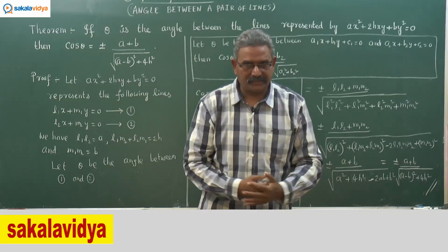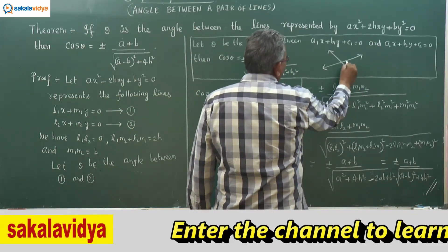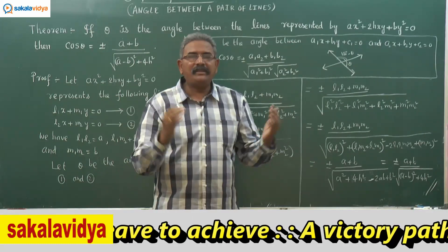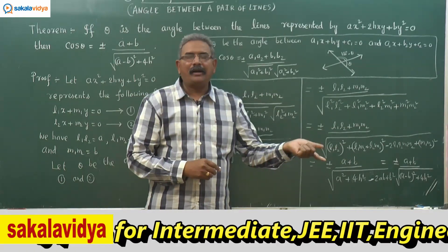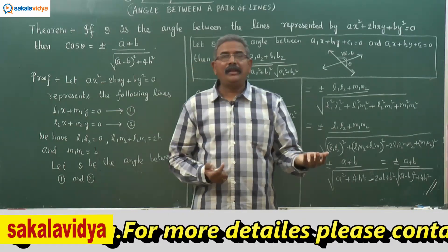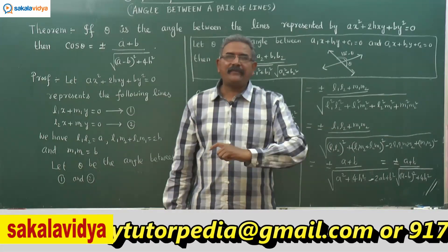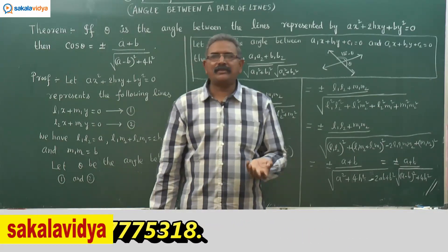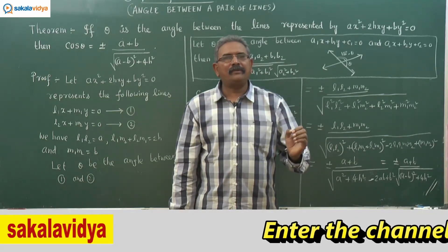You may wonder why we get plus or minus. When two lines intersect, one angle is theta and the other is 180° - theta. If theta is acute, 180° - theta is obtuse. For the acute angle you get a positive sign and for the obtuse angle a negative sign. So cos theta > 0 means theta is acute, and cos theta < 0 means theta is obtuse. If the question specifies the acute angle, write cos theta = |a + b| / √[(a - b)² + 4h²].